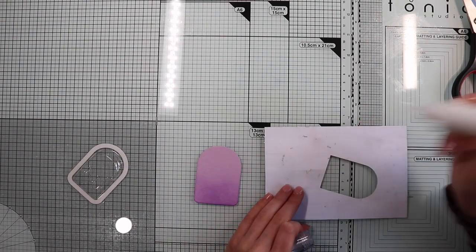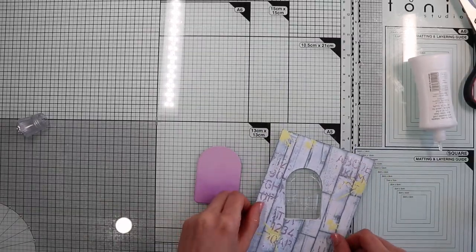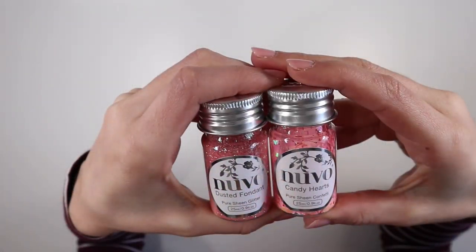Okay, now I'm going to glue the blister on the back of the background panel, then fill it with a mix of confetti.